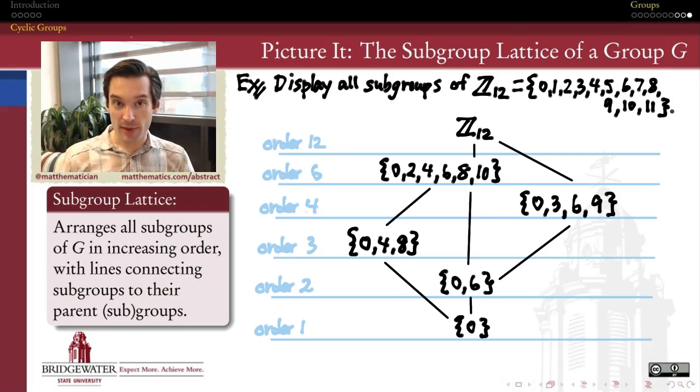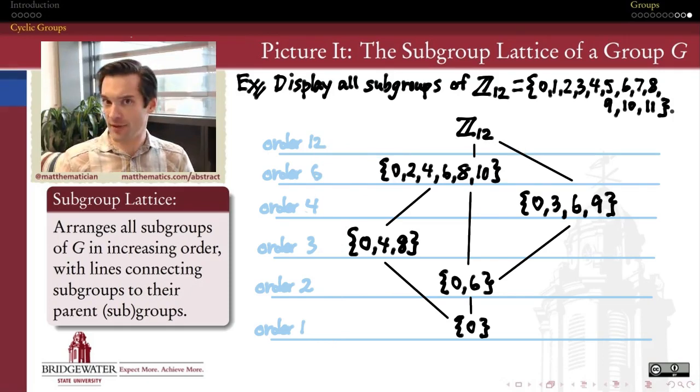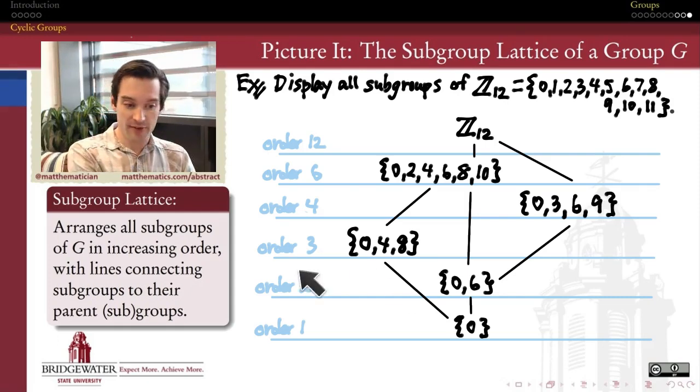If we were to try to do this subgroup lattice process for a non-cyclic group, it would be a lot more interesting of a process. Because in any given order that we could possibly have, we don't know yet whether or not the orders of subgroups will be restricted to divisors of orders of the supergroup. It does turn out that's the case, but we're not ready to prove that yet. And even on one rung of this ladder, if this were not a cyclic group, we may have a lot more possibilities for subgroups of that given order.